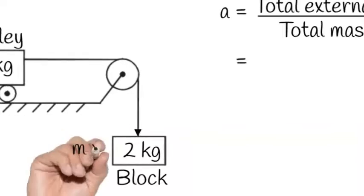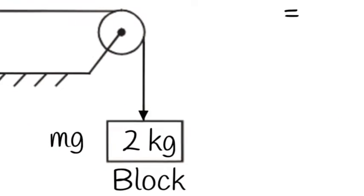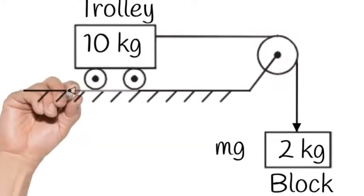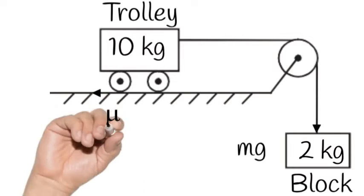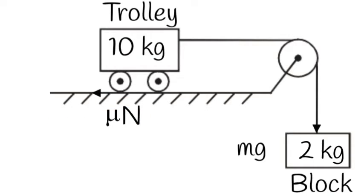Total external force is the force due to the block, that is mg, minus the total resistive force due to the trolley, that is μN.